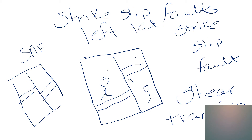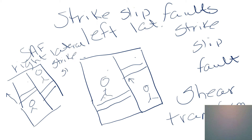The San Andreas fault — the movement is this way. Standing over here and looking at it, the other side has moved to our right. Standing over here, it also looks like the other side has moved to our right. So the San Andreas fault is a right-lateral strike-slip fault. Shear is the force, and transform would be the type of plate boundary.